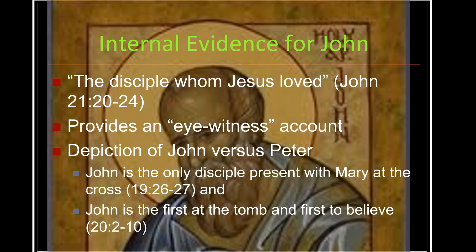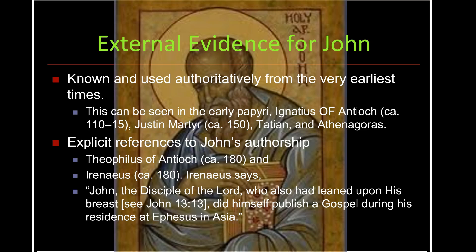The depiction of John versus Peter makes John the likely author. For instance, John is shown to relay Peter's questions to Jesus in chapter 13. John is the only disciple present with Mary at the cross in John 19, and John is the first at the tomb and the first to believe in John chapter 20. Each of these internal references supports the conclusion of Johannine authorship.